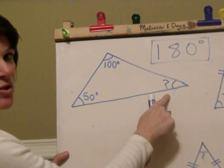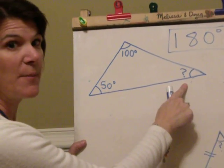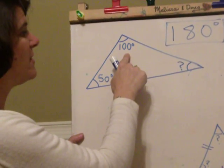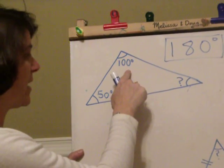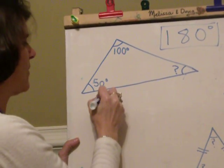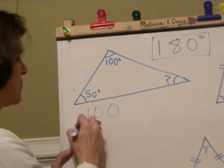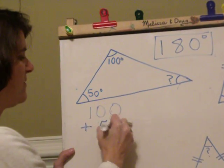So to figure out the mystery, the first thing I'm going to do is add the angles I know. One hundred and fifty. So I add one hundred and fifty, and I get 150.